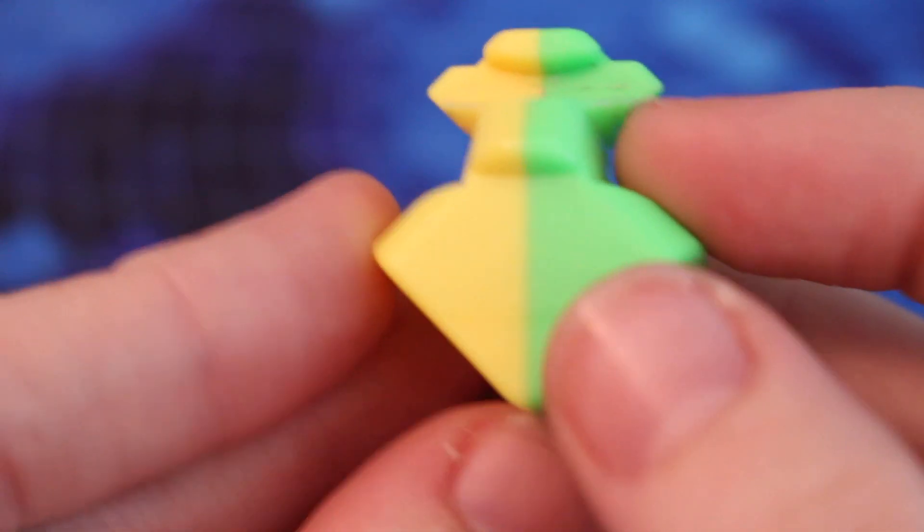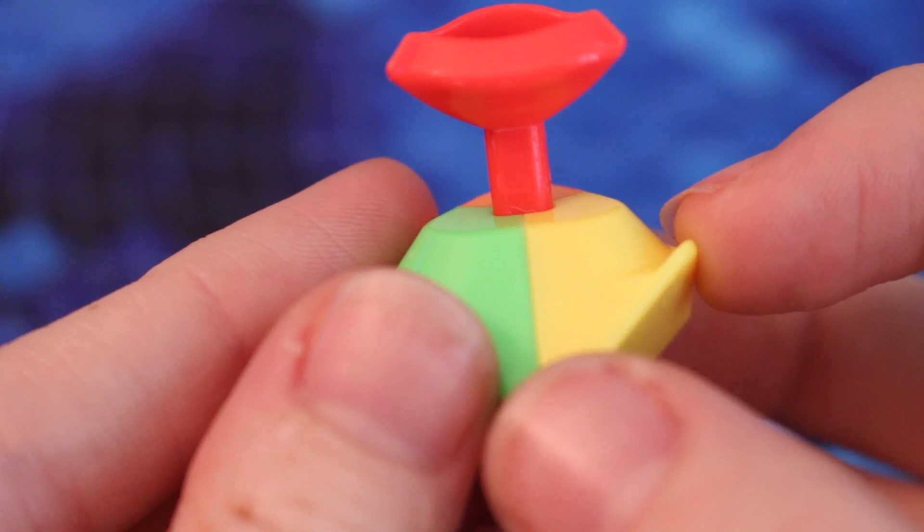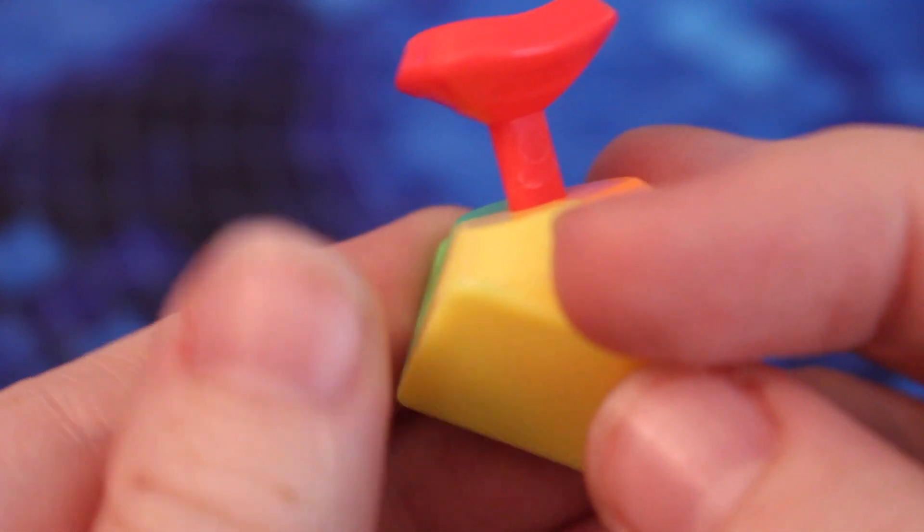The edge pieces are very blocky with a large hump on the side. The corners are also slightly blocky, but you don't really feel it when you're turning.